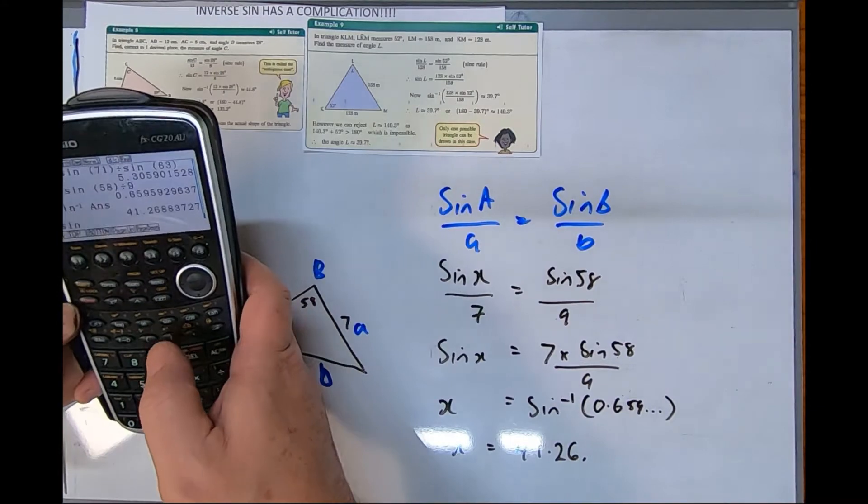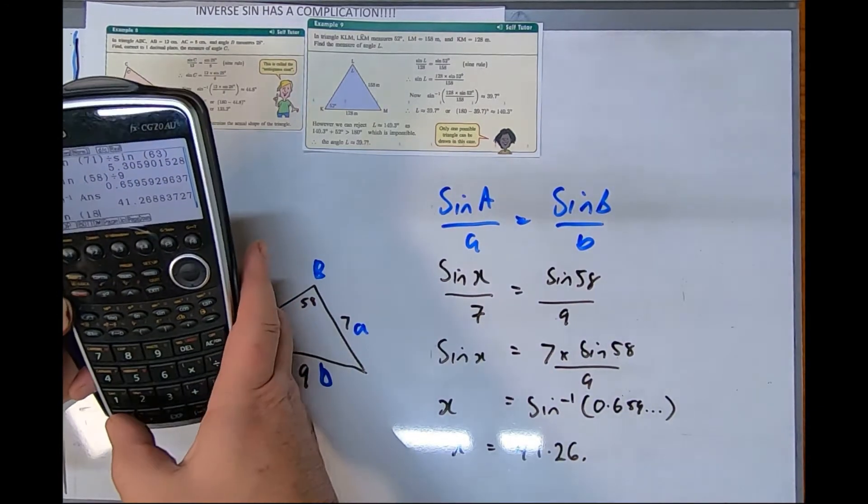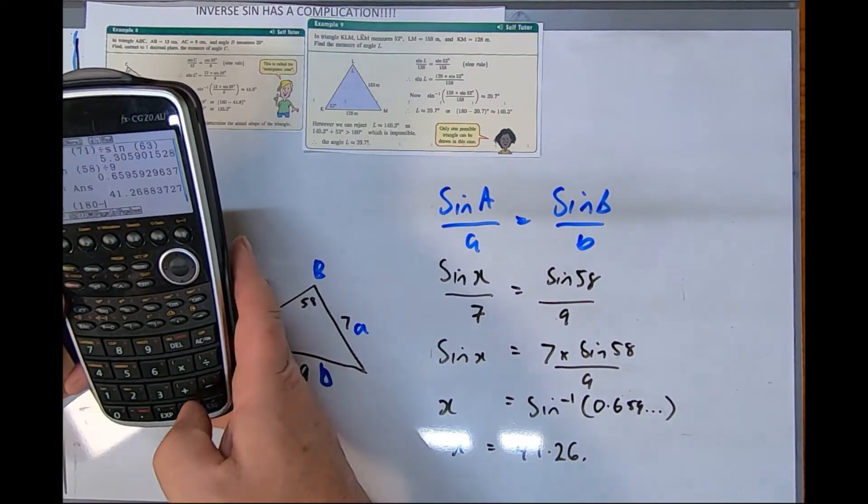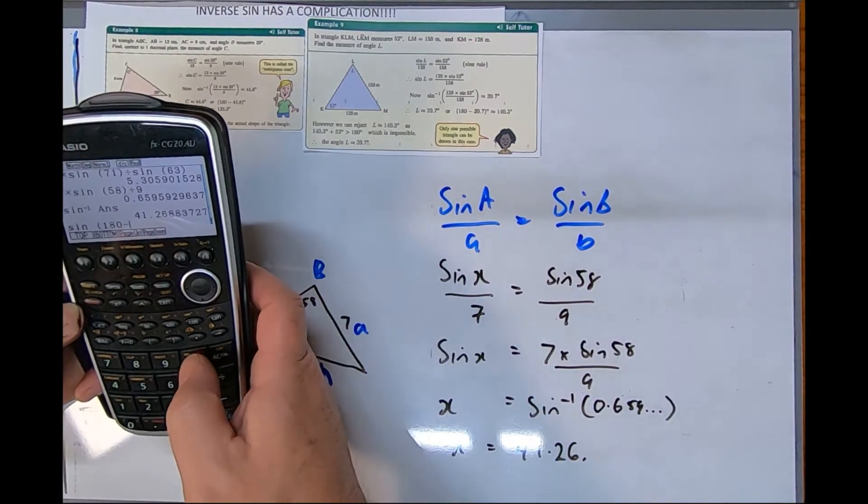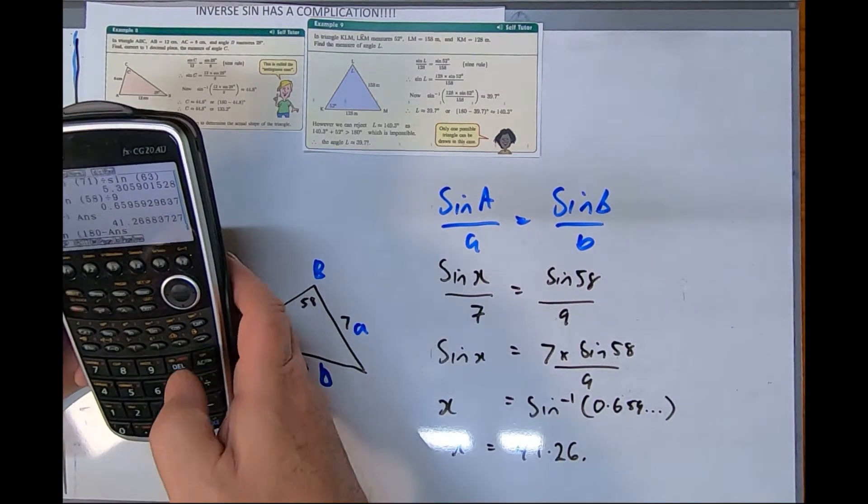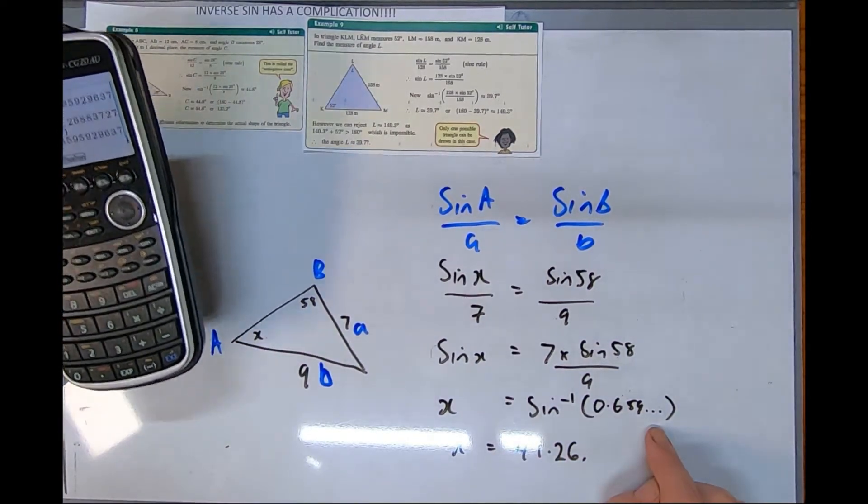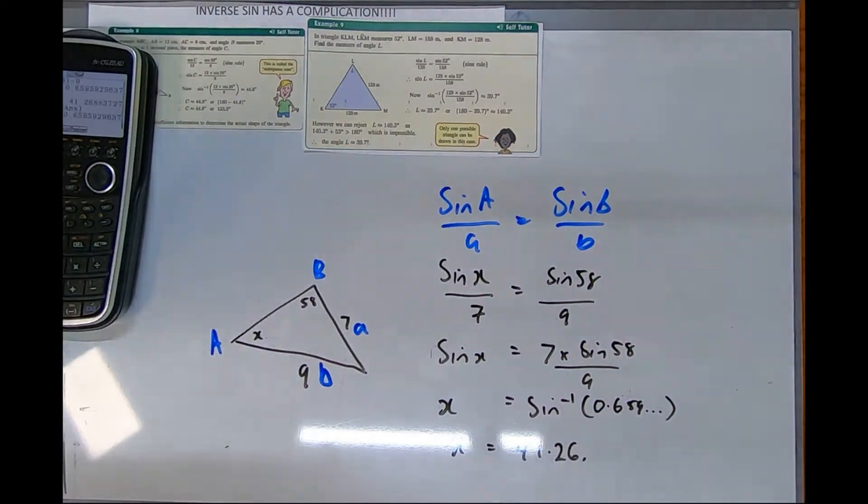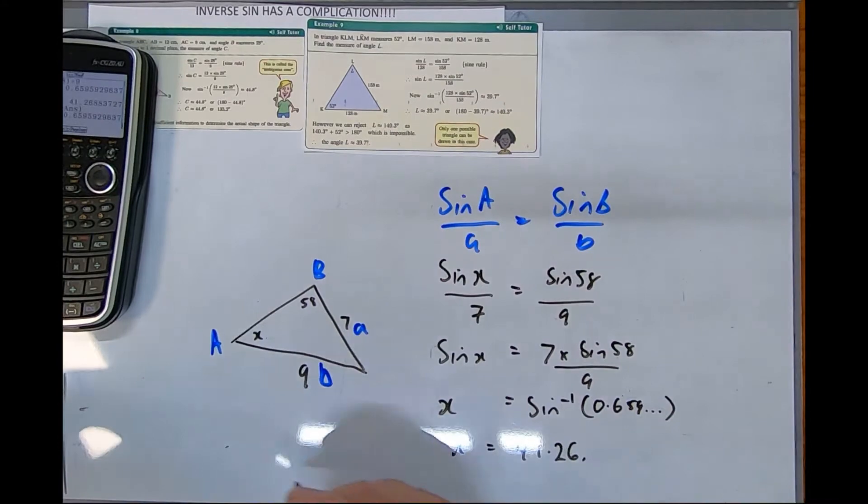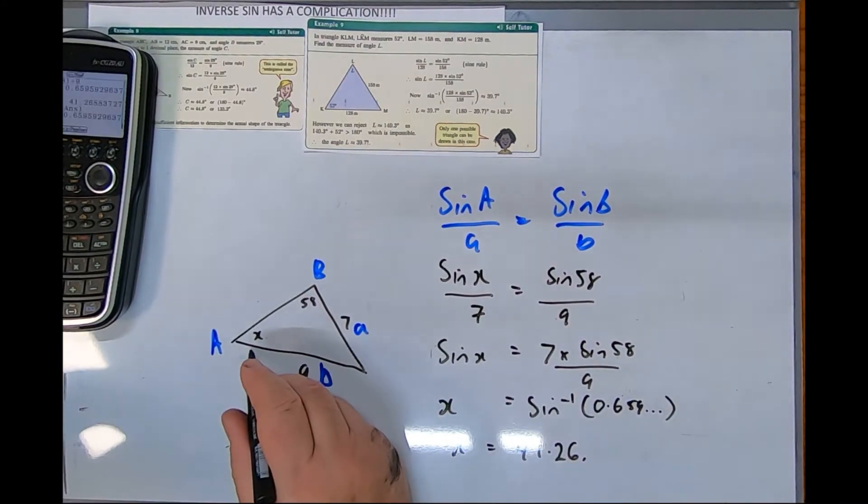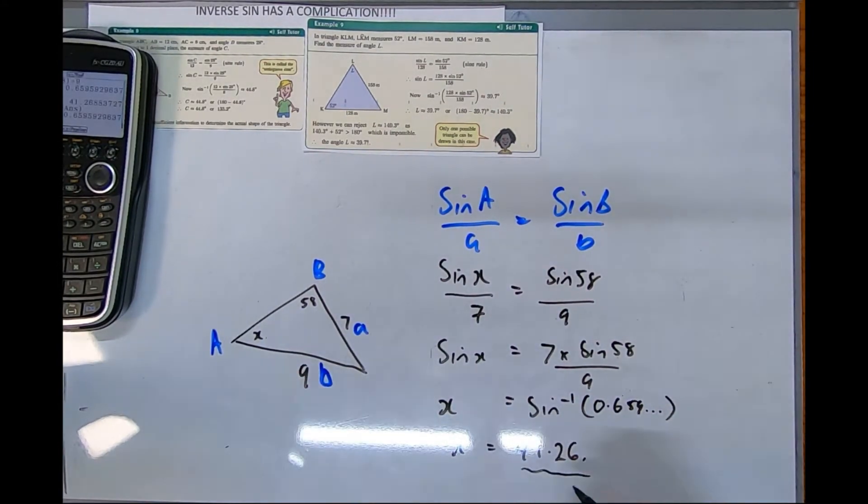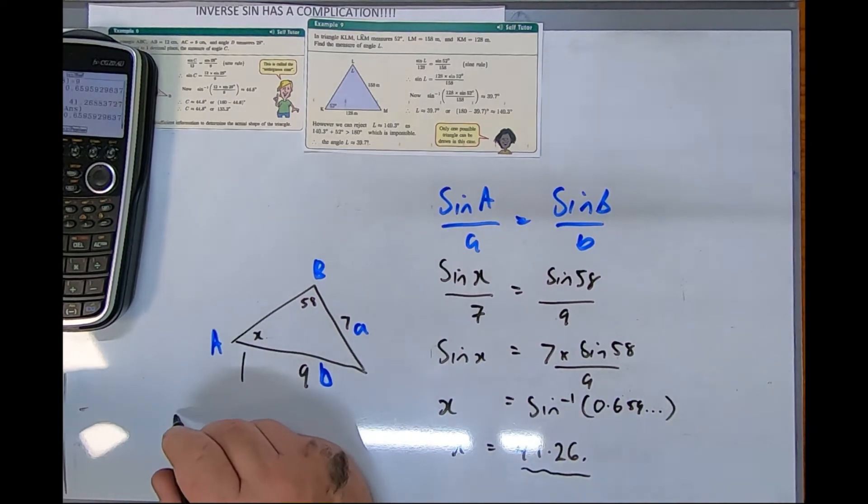However, we've got this picture. If I type in what is sin of 180 take that last answer, I'll get the same number. So the problem here is this number could be around 41 or it could be 139.